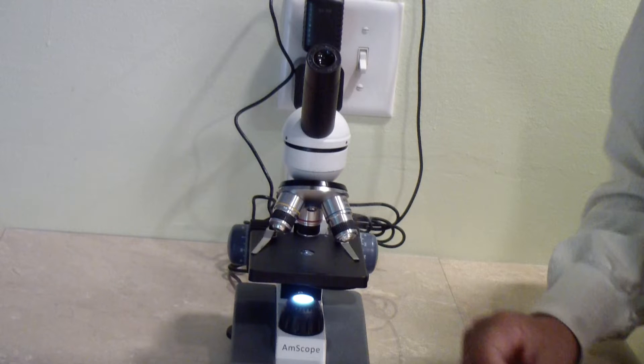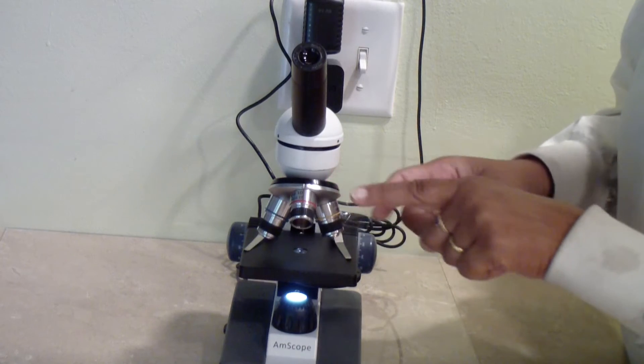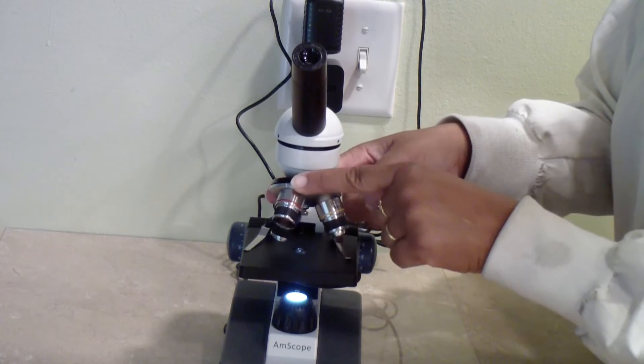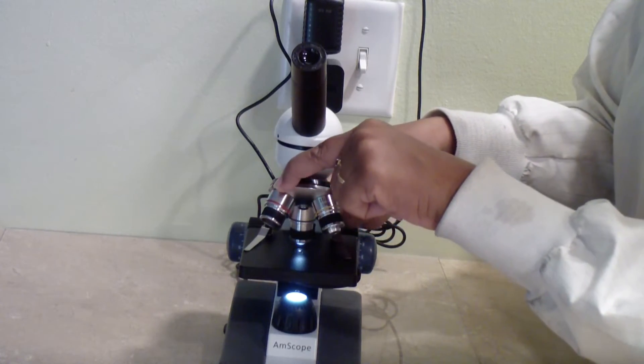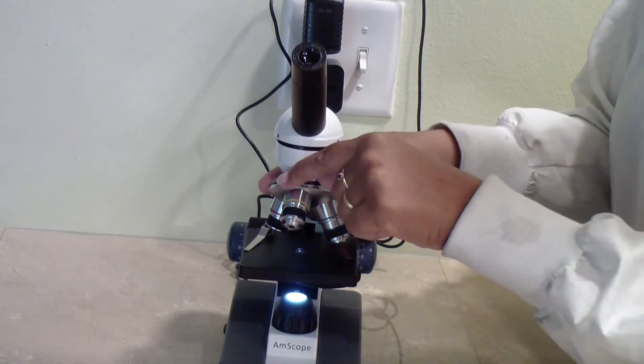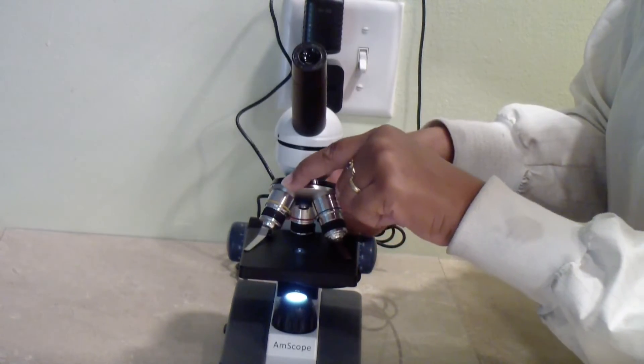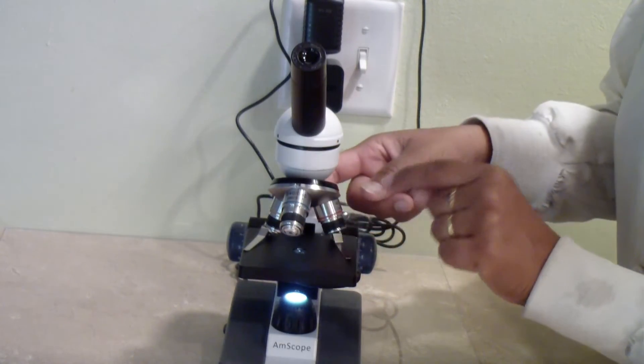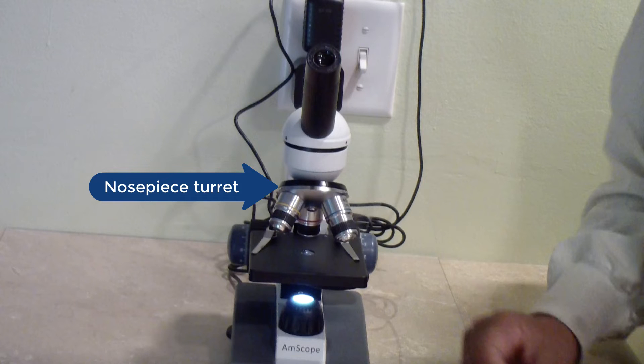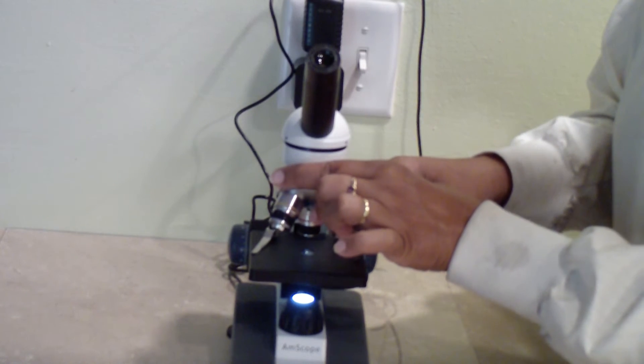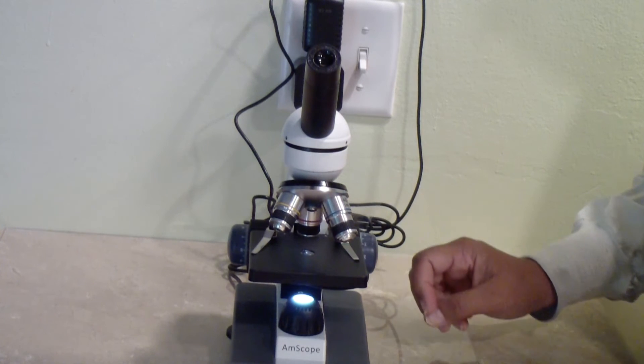The microscope comes with three objective lenses: a 4x red line, a 10x yellow line, and a 40x lens with a blue line. To switch lenses, grab the nosepiece turret at the notches and turn until the lens of your choice points downward.